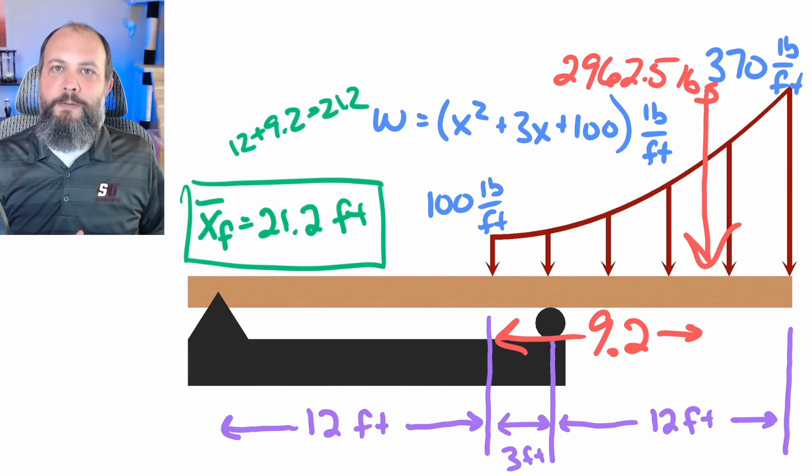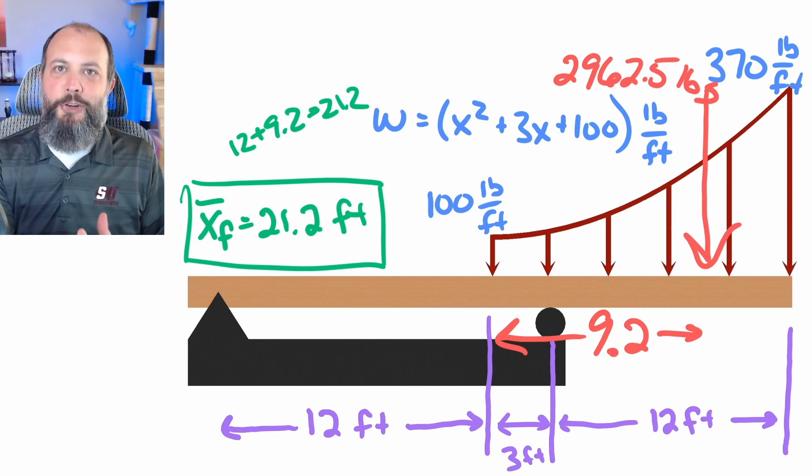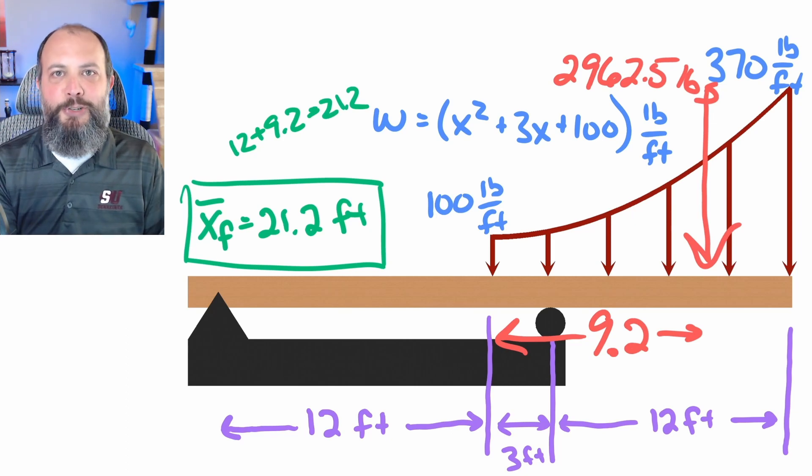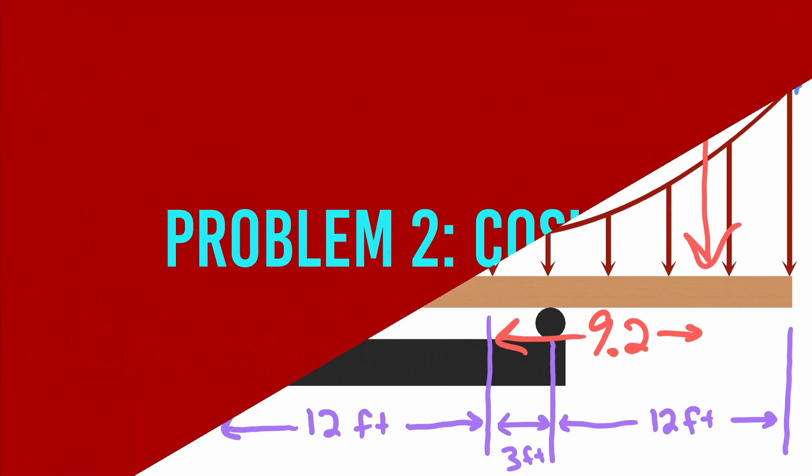I said at the beginning of the problem, I wanted to find the line of action measured from the pin joint, because in the next chapter, you're going to calculate moments about that pin joint. So I take the 9.2 plus the 12 feet on the left side of the force to the pin joint and get 21.2 feet to the pin joint.